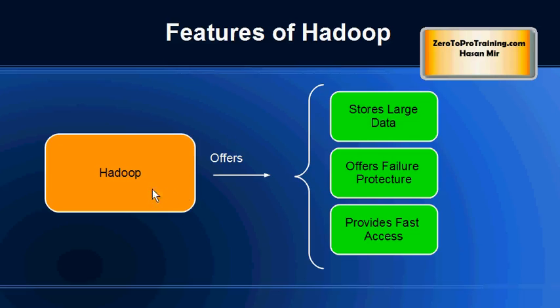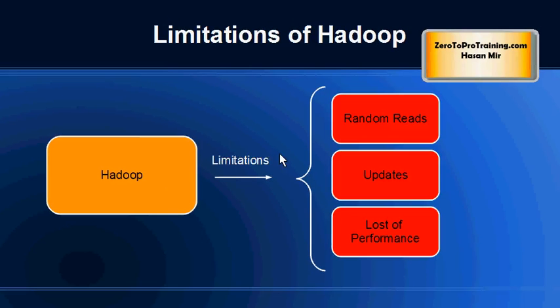We have talked about how Hadoop addresses the limitations of the distributed file system. You can store more data in Hadoop, it does offer you failure protections, and also it gives you faster access to the data. So the benefits of Hadoop come at some cost — Hadoop does have limitations, which is why it's not suitable for all kinds of applications; it's suitable for a specific kind of applications.